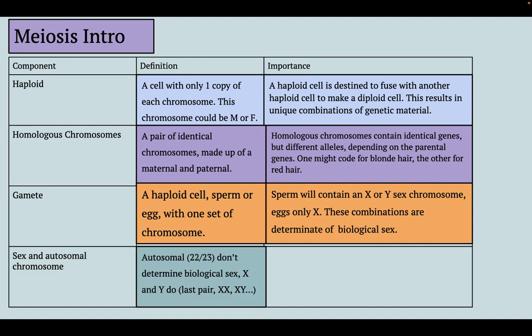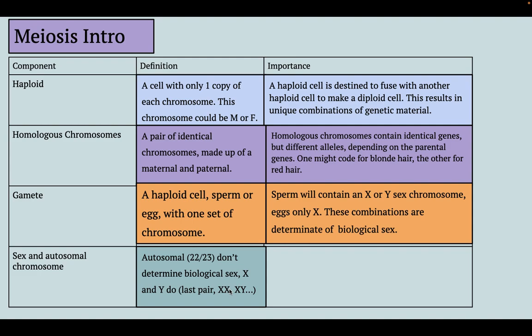What are the differences between sex and autosomal chromosomes? The first 22 pairs are what we call autosomal — they don't determine biological sex. X and Y do code for biological sex, and they also code for some traits not necessarily related to sex. Sometimes you can inherit a third chromosome for any of these 23 pairs, which usually results in very atypical or abnormal traits.